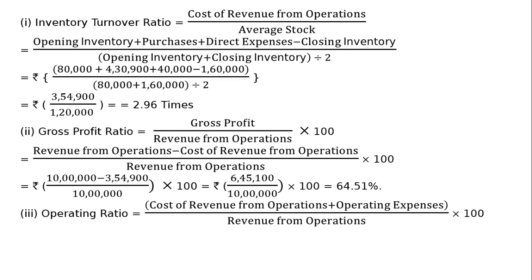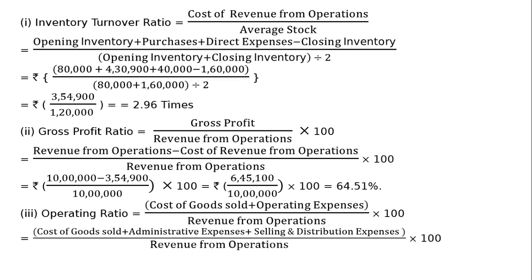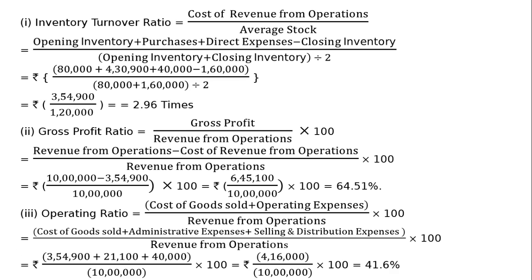That is equal to cost of goods sold plus administrative expenses plus selling and distribution expenses, whole divided by revenue from operations into 100.